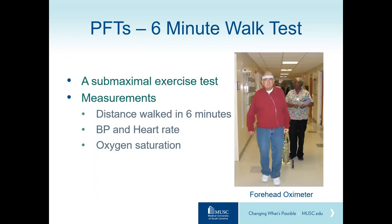Another important pulmonary function test is the six-minute walk test, a submaximal exercise test performed in the hallway of the rheumatology or pulmonology clinic. It measures the distance in meters walked over six minutes. Additional measurements include blood pressure, heart rate, and oxygen saturation. Because finger oximetry is unreliable in patients with Raynaud's phenomenon, a forehead oximeter is used instead.